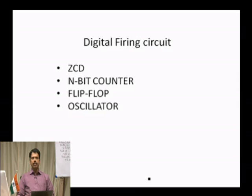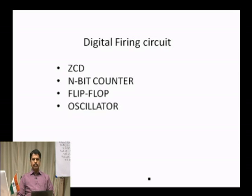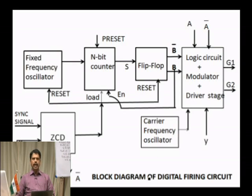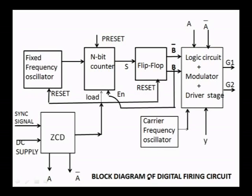A digital firing circuit consists of a zero crossing detector, n-bit counter, and flip-flop oscillator. The block diagram of a digital firing circuit consists of a fixed oscillator, n-bit counter, flip-flop, logic circuit, modulator, driver stage, zero crossing detector, and carrier frequency oscillator.